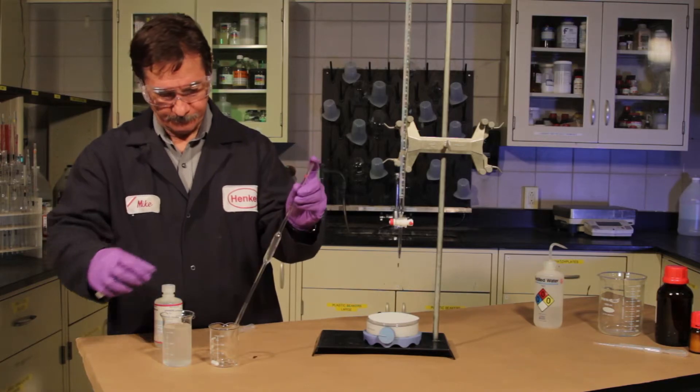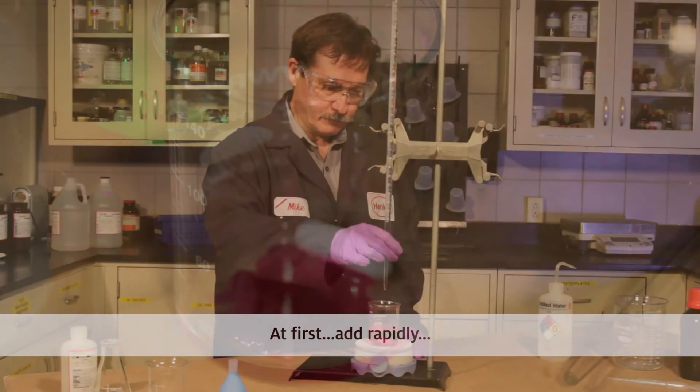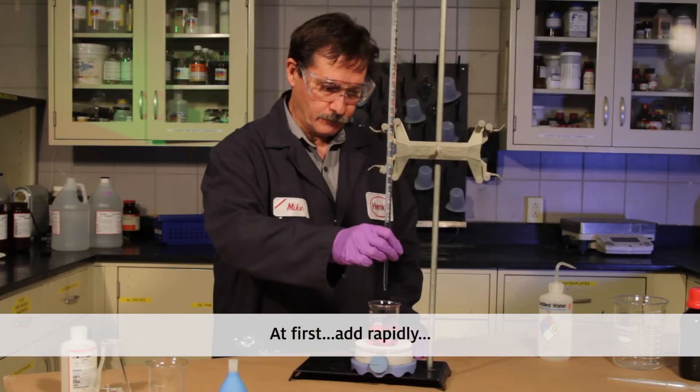Now that we have a measured sample of our bath and have added the recommended indicator, let's add some titrant. At first, we can add titrant rapidly.